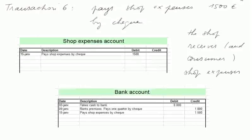Transaction six. We pay shop expenses of 1,500 euros by check. So we receive various things called shop expenses worth 1,500 euros — it's a debit in the shop expenses account. And the bank account is credited 1,500 euros for the value it gives out. So now at the bank we have 5,500 euros.